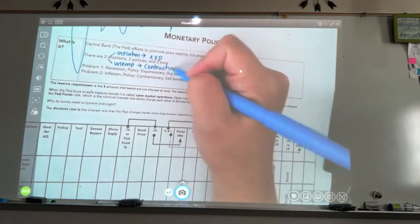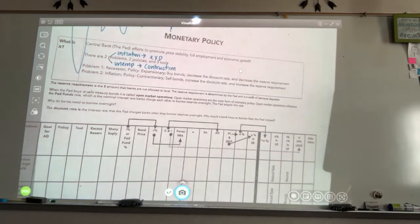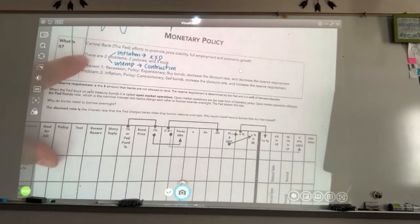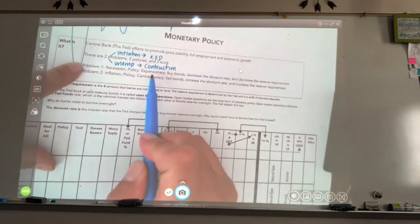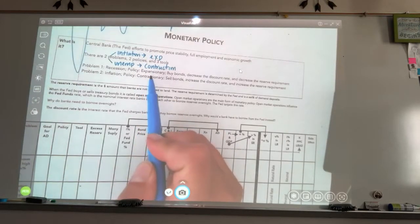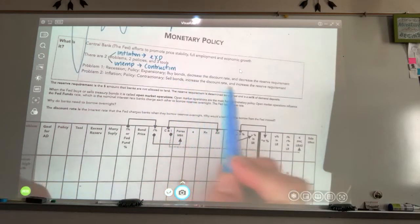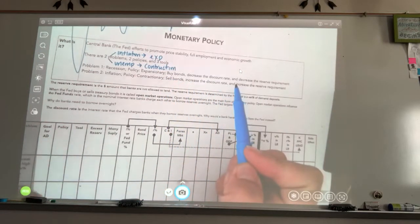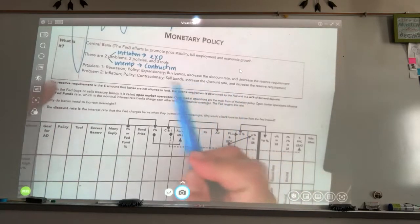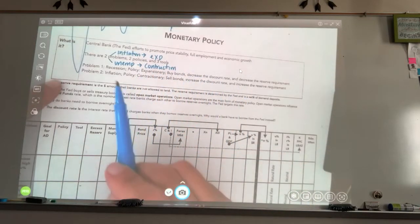So our problem one, which is that unemployment, we are going to use expansionary. I call it easy because we're easing up the money. The government will buy bonds, decrease the discount rate, and decrease the reserve requirement. They go in the same direction, right? Decrease, decrease. I always think you're going down that hill.